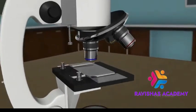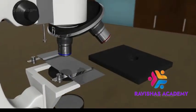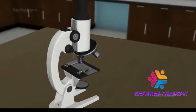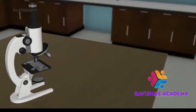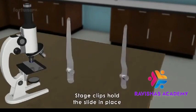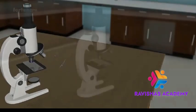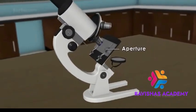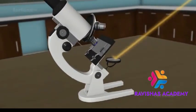Below the objective sits a flat platform known as the stage. On the surface of the stage, two stage clips hold the slide in place. A small aperture is present in the stage, allowing light into the body.